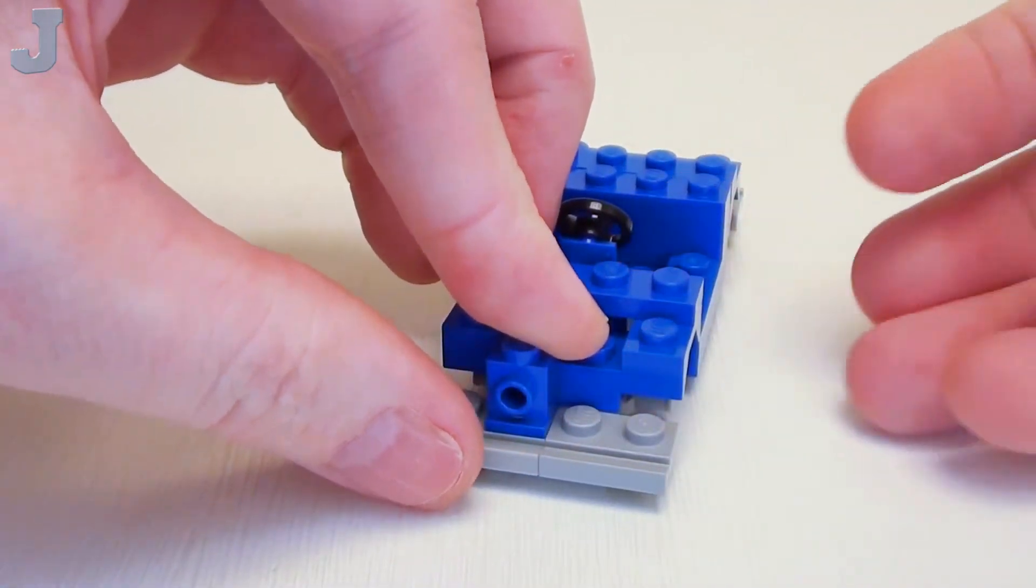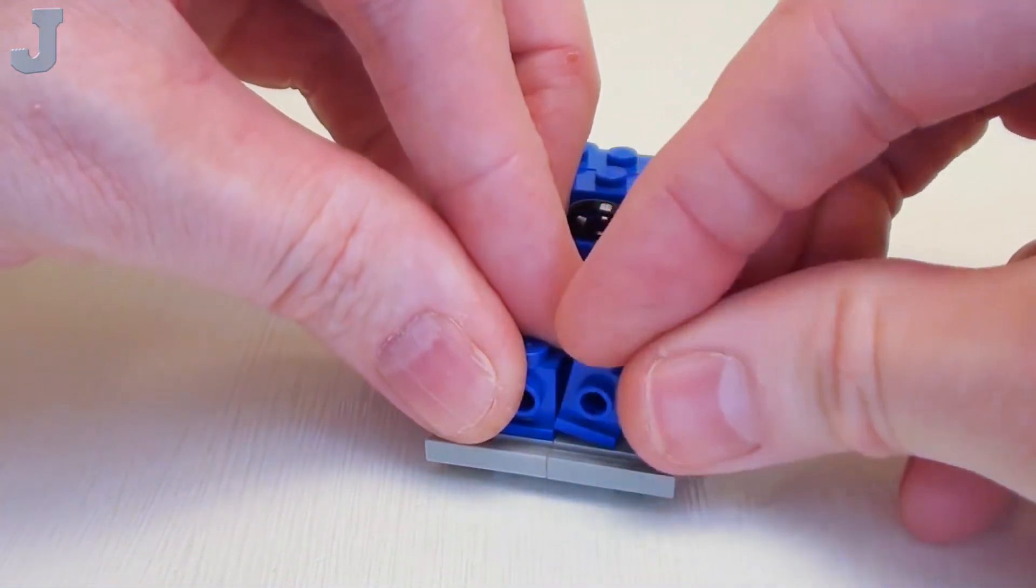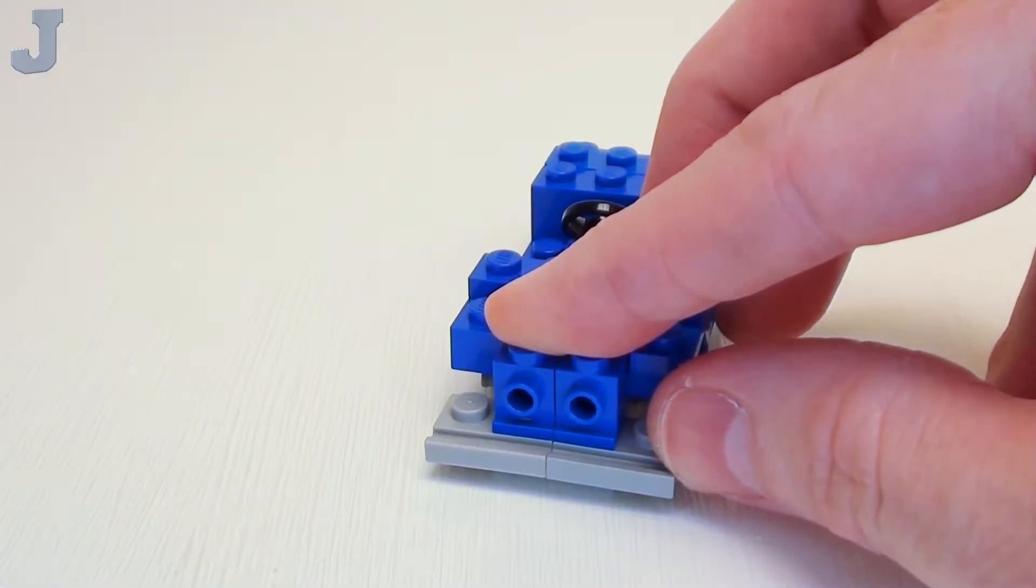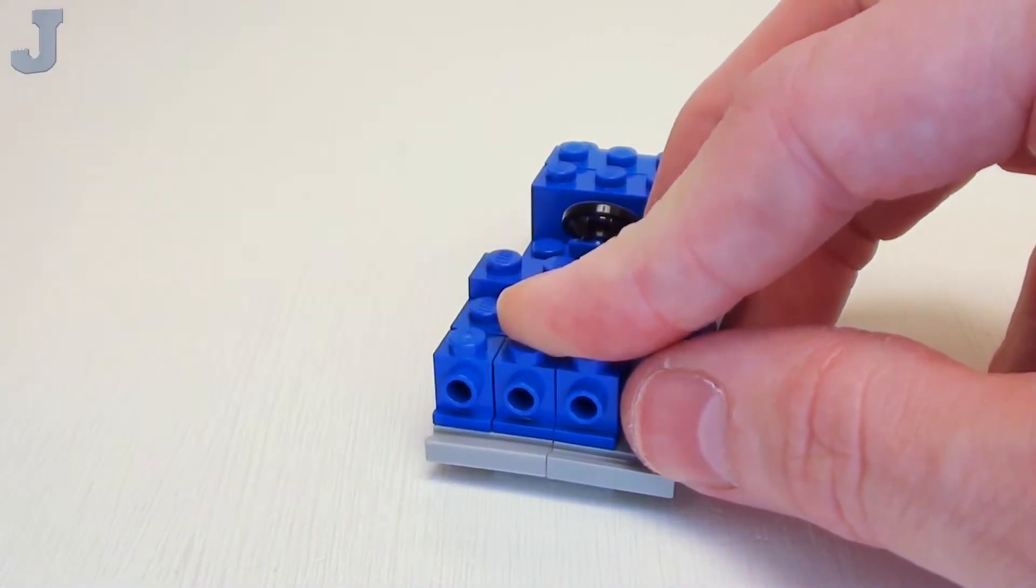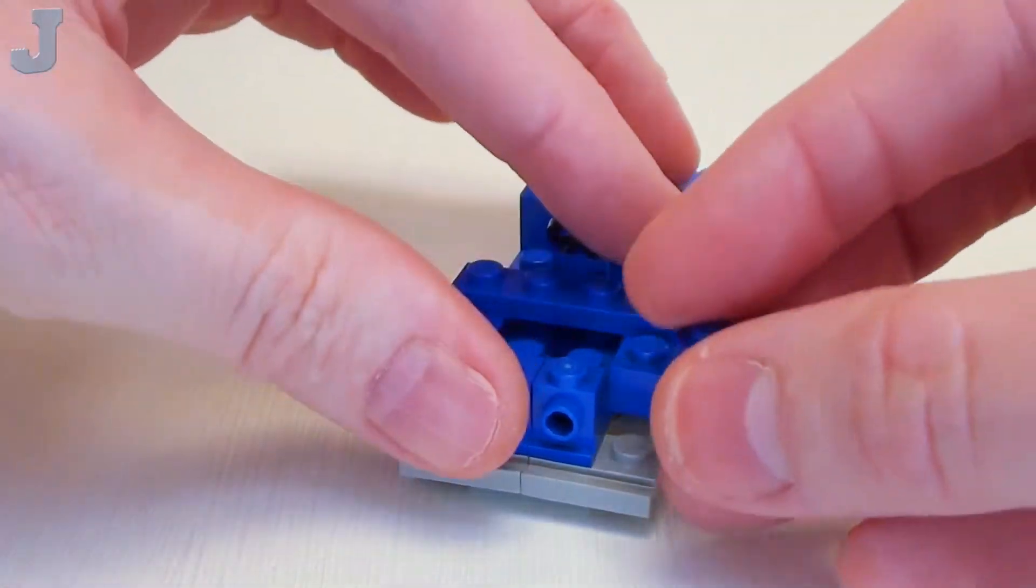I'm going to set down four 1 by 1 angular headlight bricks. These always come in handy when making vehicles.